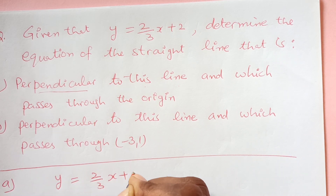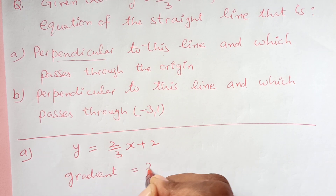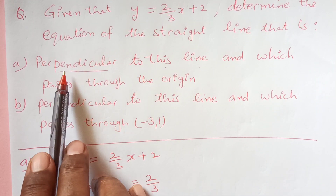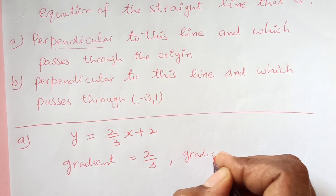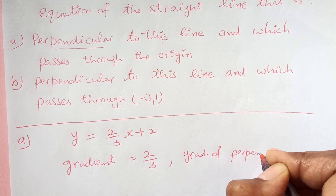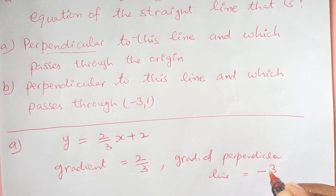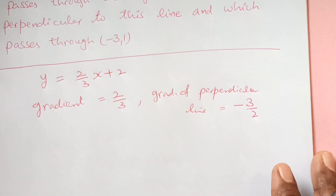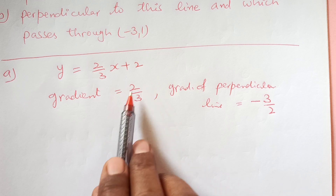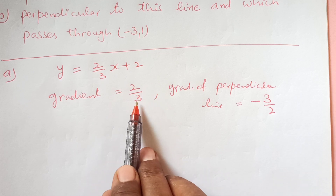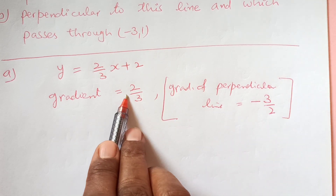First of all, we need to know the gradient. The gradient of this line is 2 over 3. We are looking for the equation perpendicular to this, so the gradient of the perpendicular line will be equal to negative 3 over 2. To find the gradient of the perpendicular line, you take the negative reciprocal — change the sign and swap the numerator and denominator. Since the original gradient is positive, the perpendicular gradient is negative.